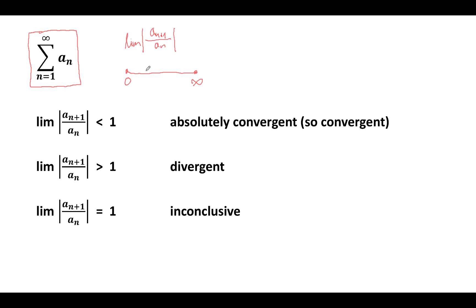The ratio test says: when the limit of this quantity is less than 1, the series is absolutely convergent, and therefore convergent. On the other hand, when the limit is bigger than 1 — potentially equal to infinity — the series is divergent. Finally, when the limit is equal to 1, anything could happen: the series might be convergent or divergent. In this case the test is inconclusive and doesn't provide any information.